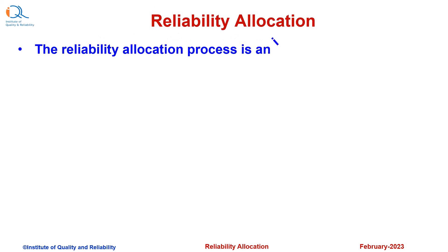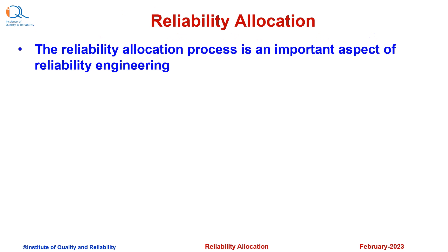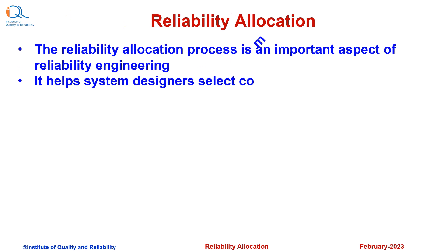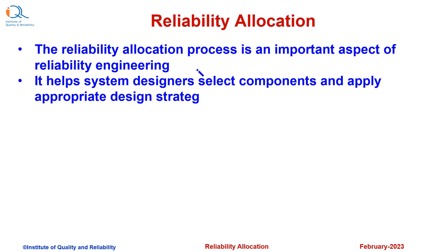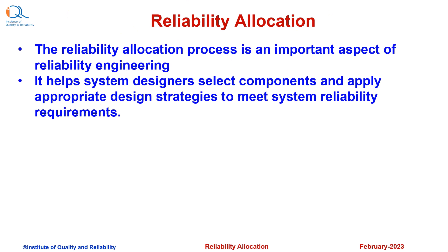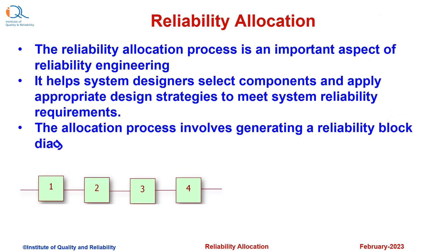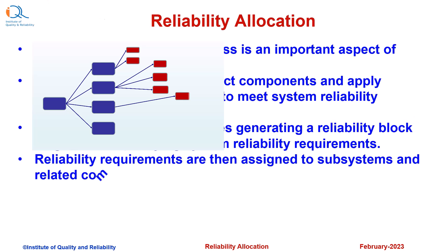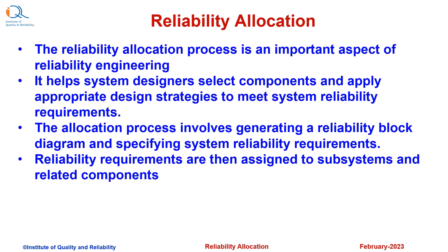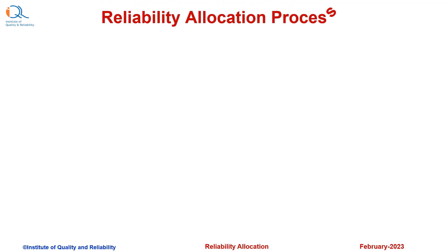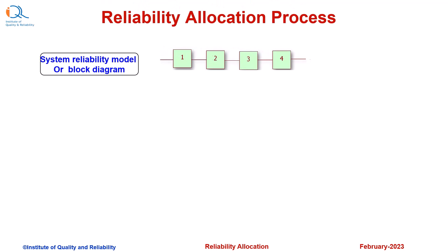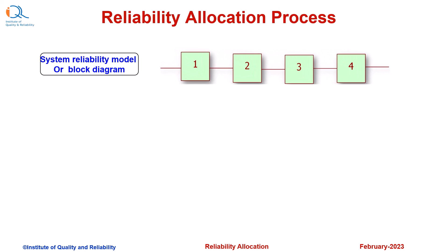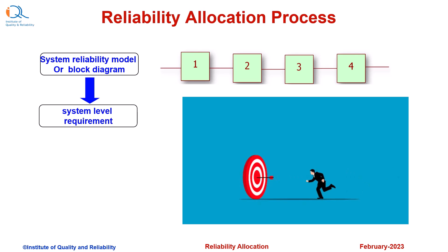The reliability allocation process is an important aspect of reliability engineering. It helps system designers select components and apply appropriate design strategies to meet system reliability requirements. The allocation process involves generating a reliability block diagram and specifying system reliability requirements. First, we develop the system reliability model or block diagram, and then we define the system-level requirement and targets.